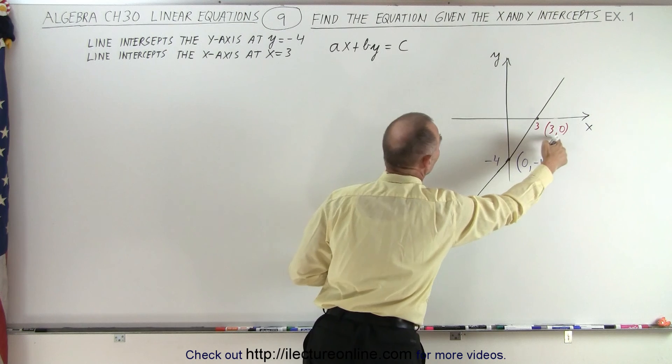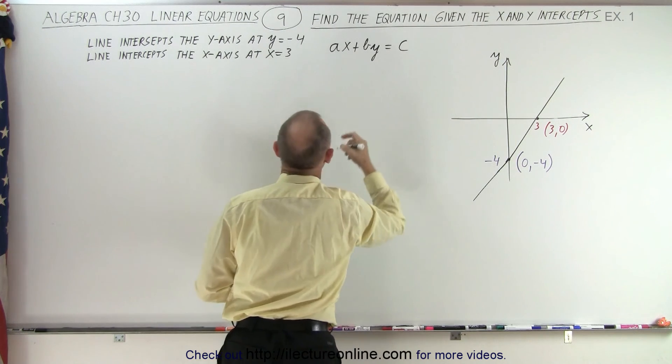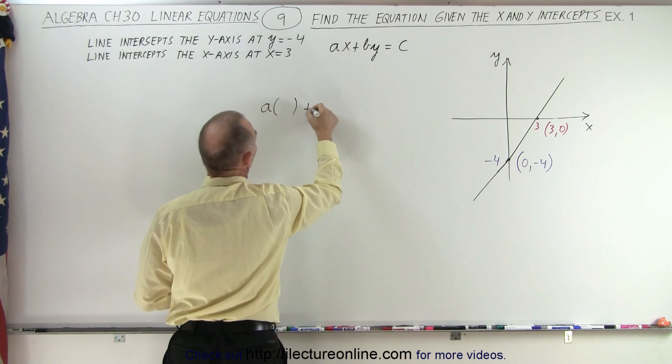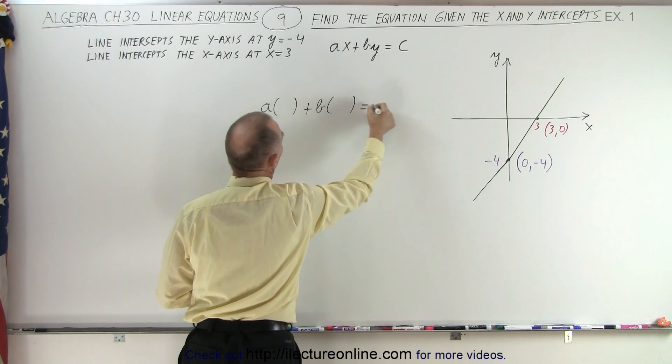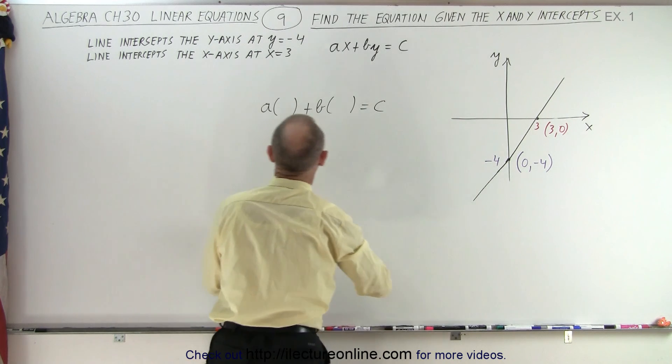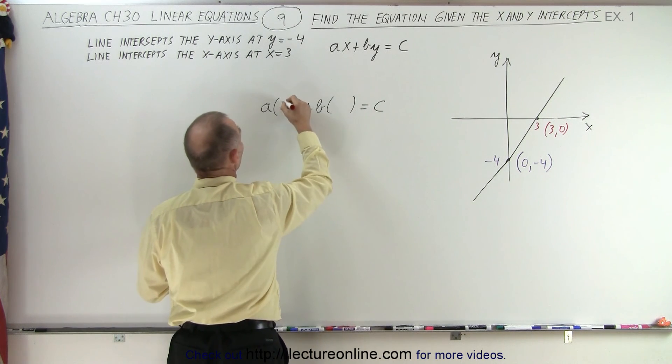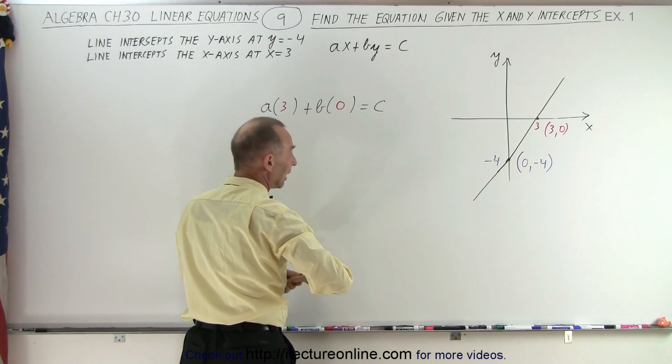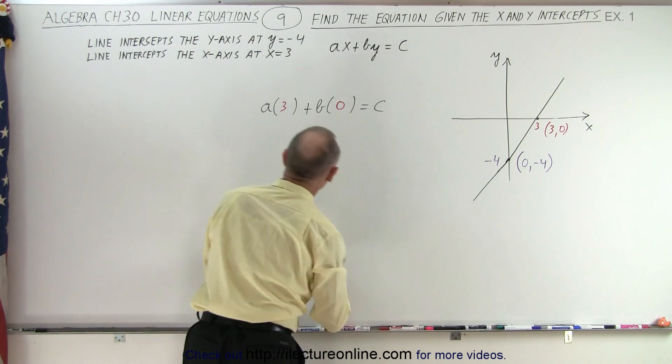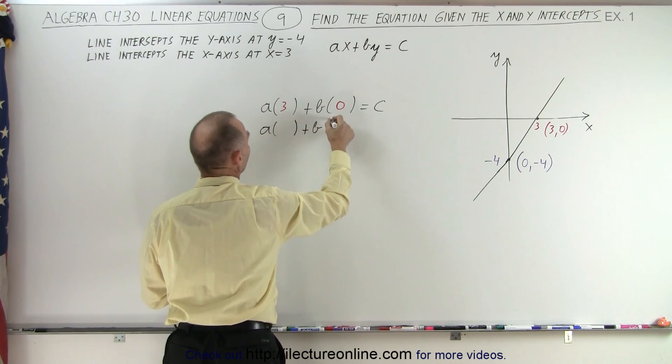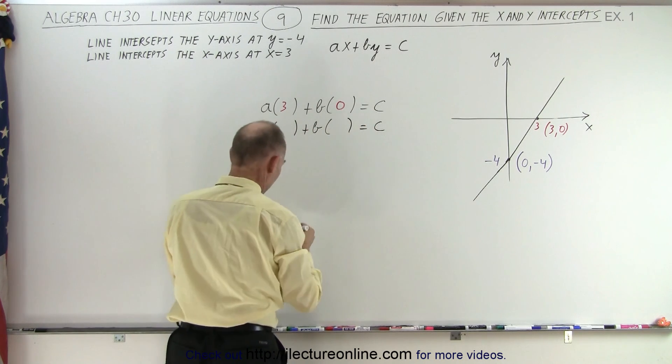First, we're going to plug in 3 and 0 for x and y in the general equation. So, a times x plus b times y equals c. Let's plug in those values. We're going to plug in 3 for x and 0 for y. And then we're going to do that again using the second intercept.